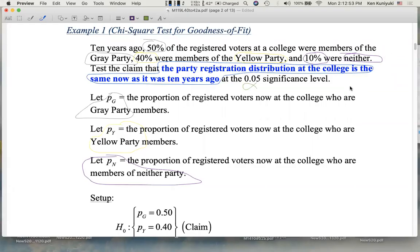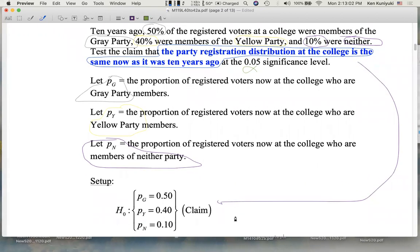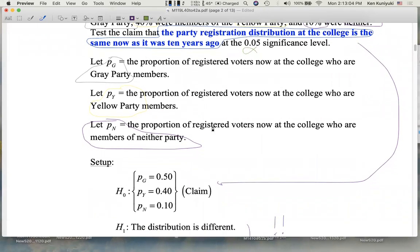Hi everyone, let's continue to test the claim that the party registration distribution at the college is the same now as it was 10 years ago. That corresponds to the null, which is the claim in this wording.